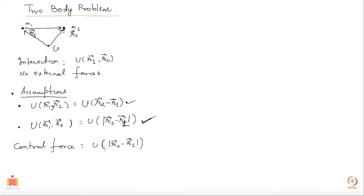Now let us ask — we would like to solve this system, and this system is solvable; we will be able to find the full solution. But at the moment the goal is to figure out as much as we can about the system without specifying anything about the potential other than what we have already said. I do not want to assume any special form for the potential, and I want to see how much I can say just based on the fact that this is a central force system. One thing is clear: this is a six-dimensional system with six degrees of freedom, since each particle has three degrees of freedom.